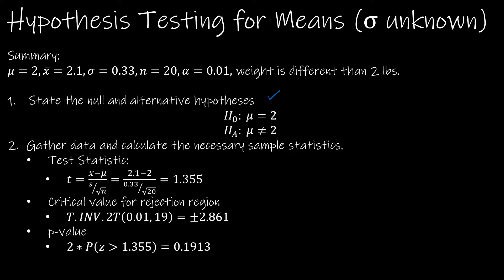Remember our test statistic. Our t-score is still the same t-score we found previously. Keeping in mind, we want to keep parentheses around the top and on the bottom. And we end up with a t-score of 1.355.